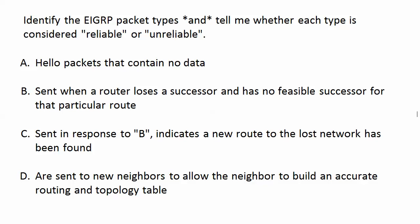B: sent when a router loses a successor and has no feasible successor for that particular route — we know this one — it's a query packet. That's where DUAL comes in with the query when we lose that successor. If there is no feasible successor, the router sends DUAL queries to see if a neighbor knows anything about this lost network.